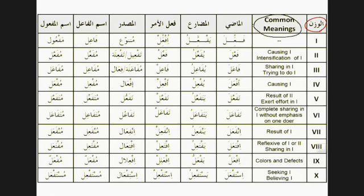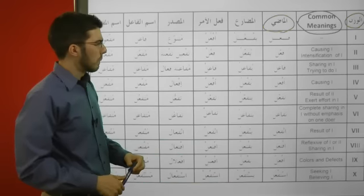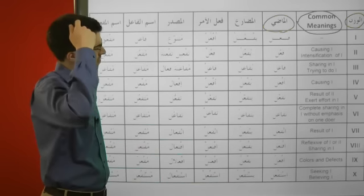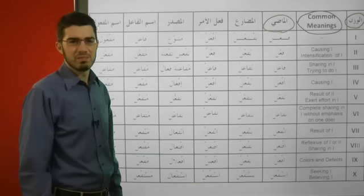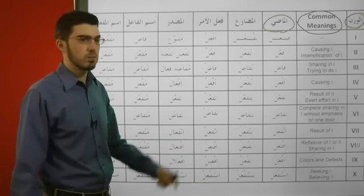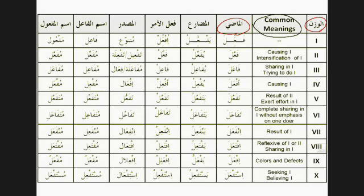Our next column, which we're going to dwell on for a moment, is the ma'adi — of course the ma'adi means the past tense. This third column is going to give you the past tense conjugation of your verb. You might be a little confused though: this whole table is for the verb fa'la, but I want the verb darasa, or jama'a, or something else. And moreover, it's conjugated for huwa, but I want maybe ana or nahnu. What's going on? Let's talk about this column in a little more depth.